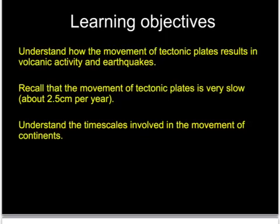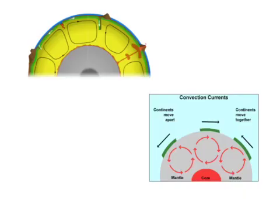We must know a little about the tectonic plates that make up the top surface, or the lithosphere, of the Earth, and how these can result in volcanic activity and earthquakes when they move, although the movement of these is very, very slow. Looking at the layers of the Earth — the core, the mantle, and at the top the crust, including the top layer of the mantle being the lithosphere — we can see that there are what are called convection currents within the mantle.